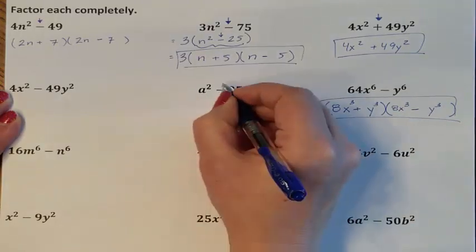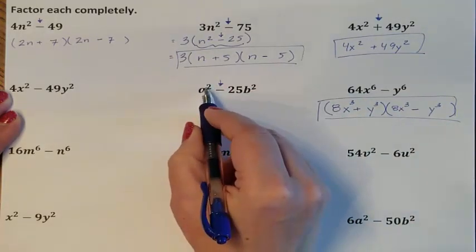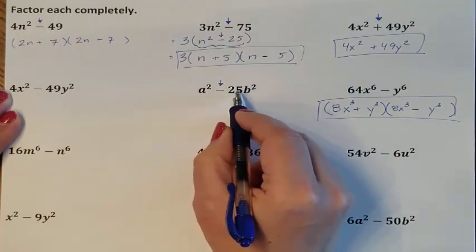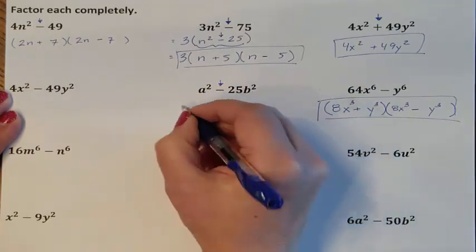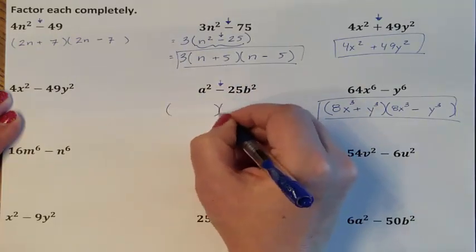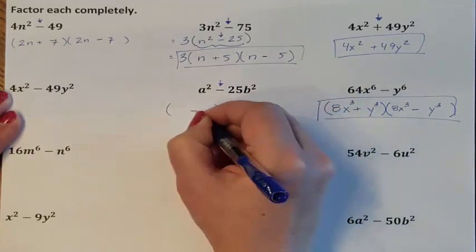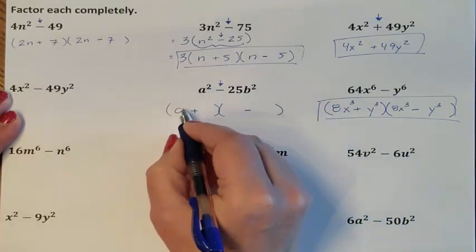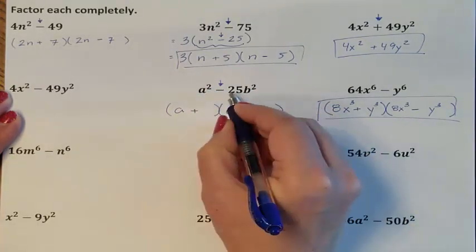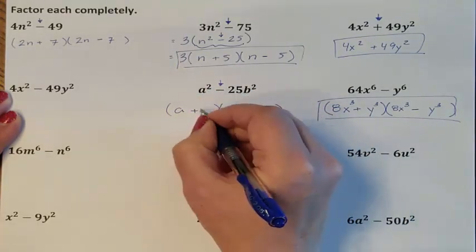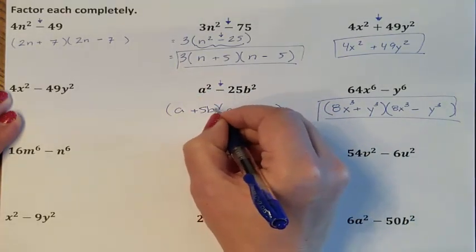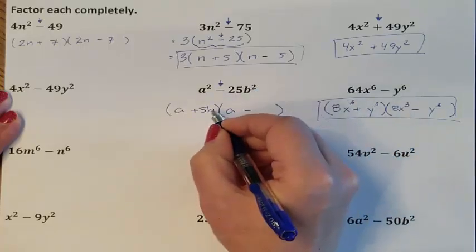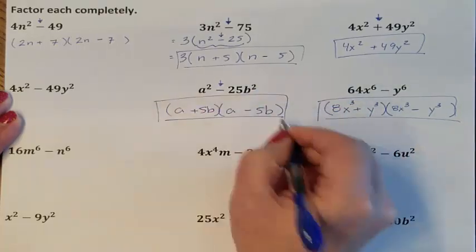It is a subtraction problem. I can divide that exponent by 2. I can square root 25. I can divide that exponent by 2. So here's my difference of two squares. It's going to be a to the first power, because 2 divided by 2 is 1. The square root of 25 is 5. It's going to be b to the first power, because 2 divided by 2 is 1. And that's my final answer.